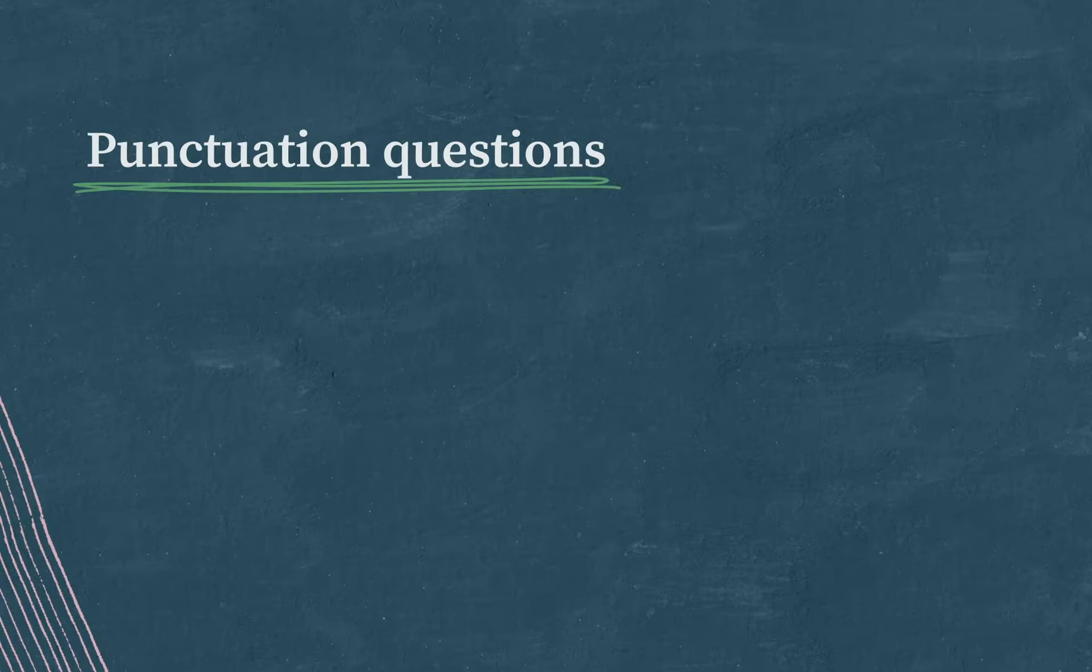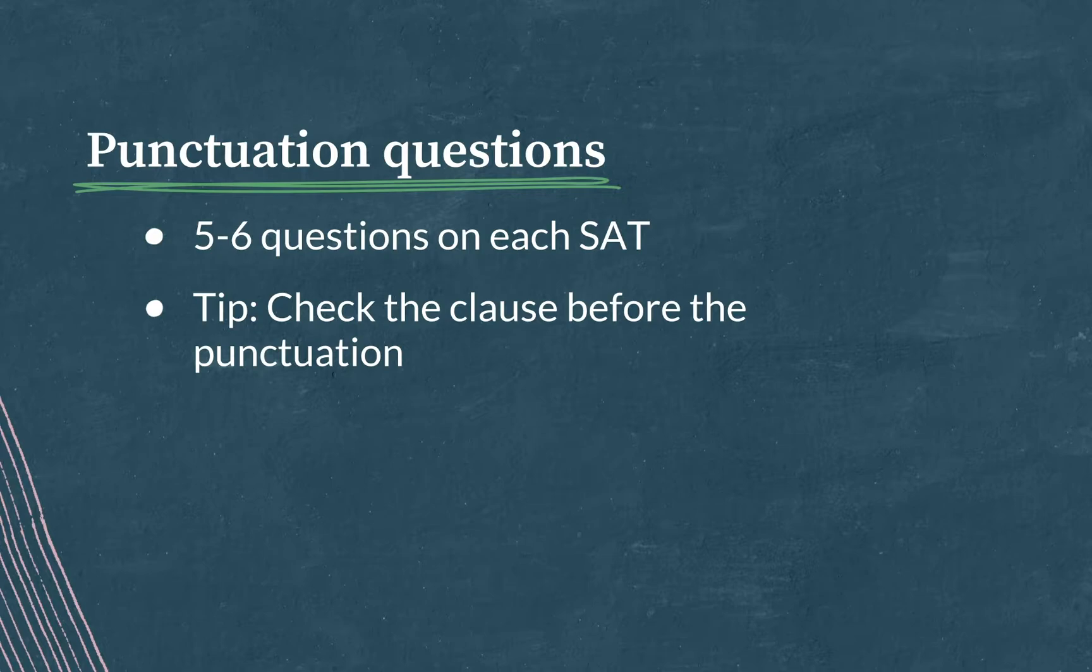How best to tackle it? You're going to see about five or six punctuation questions on your SAT. A great tip in general with punctuation questions is to check the clause before the piece of punctuation. Colons, periods, and semicolons all have to come after independent clauses. But a comma can't follow an independent clause unless it's being joined to another independent clause with a coordinating conjunction like and or but.